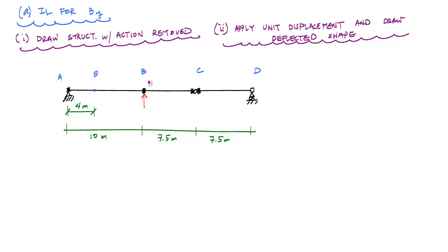So if I apply unit displacement, which means that I'm going to move point B up a distance of 1, this is what my deflected shape will look like. ABC is just one continuous segment. I can't have it deform or anything. So I push up here, which makes everything go up. And I want to find these distances.